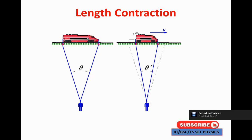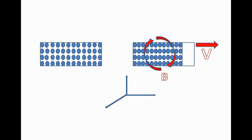How does it happen? From the diagram, if one object is moving with some velocity, and generally the flow of electrons is nothing but current — similarly, if one object is moving with some velocity, an external electromagnetic field will be generated, meaning an electric field is generated.